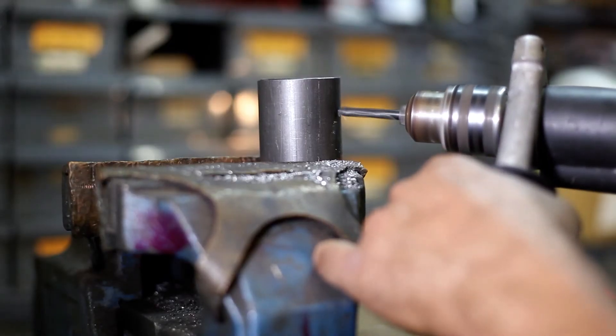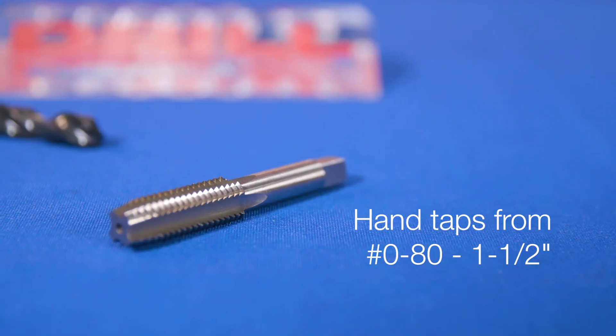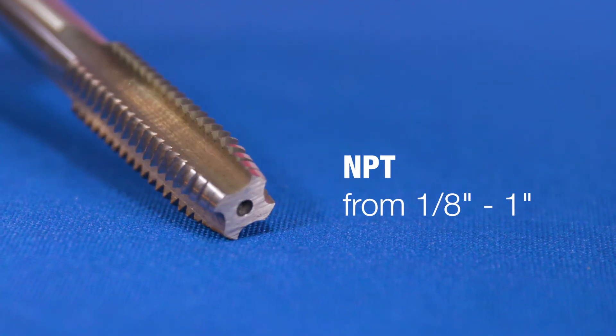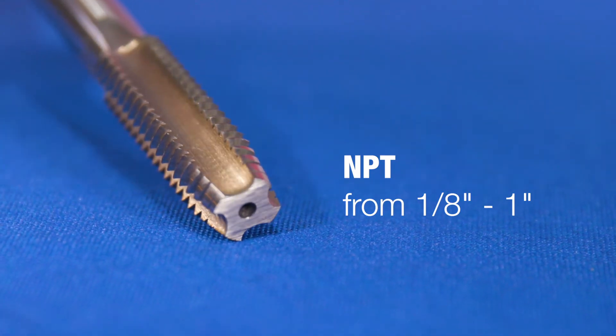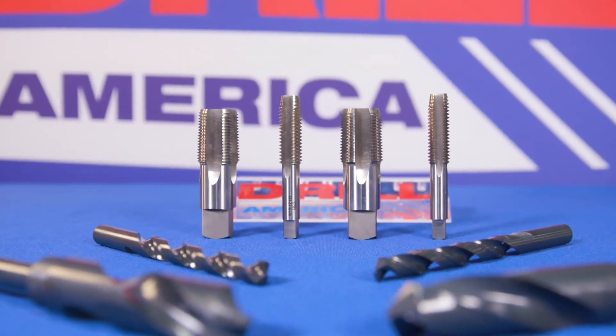They are surface treated with abrasion-resistant black oxide. Drill America tap and drill sets are available in fractional and metric sizes. NPT pipe tap sizes are also available from one-eighth to one inch. Tap and drill sets by Drill America.